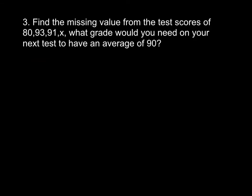All right, now on this one, we're going to be given numbers, and we have one missing. So we're going to find the missing value from the test scores of 80, 93, 91, and an unknown number. We want to find out what grade you would need to have an average of 90. So I know I want my average to be 90. I also know that I have four test scores: one, two, three, and the fourth one is the unknown one. So make sure you don't forget that one. There will be one like this on the test.